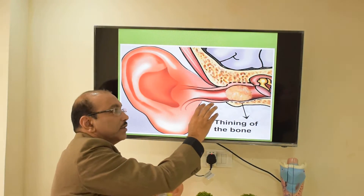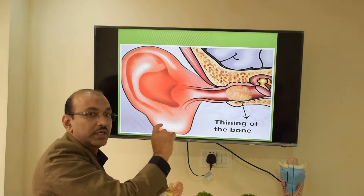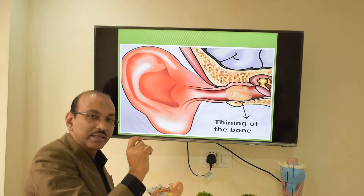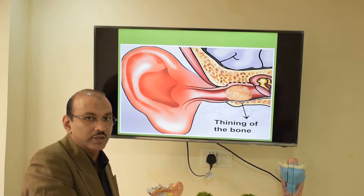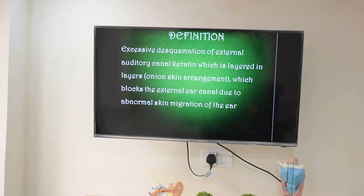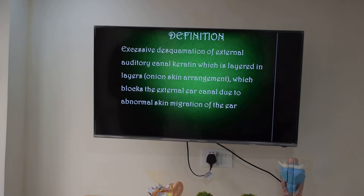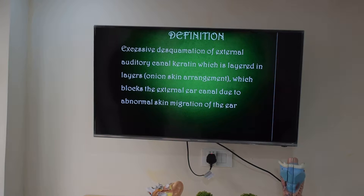In fact, it can even destroy the nearby ear canal bones — it makes them thin first and then destroys them. Keratosis obturans is defined as excessive accumulation of external canal keratin, layered in layers, which blocks the ear canal due to abnormal skin migration of the ear.